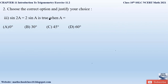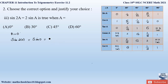The third part of the question: sin 2a equals 2 sin a is true when a is equal to what? We have to find from the four given options which value of a satisfies this. Let us check option A: a equals 0 degrees. Left-hand side: sin(2 × 0) = sin 0 = 0. Right-hand side: 2 sin 0 = 2 × 0 = 0. Left-hand side equals right-hand side, so option A is correct.